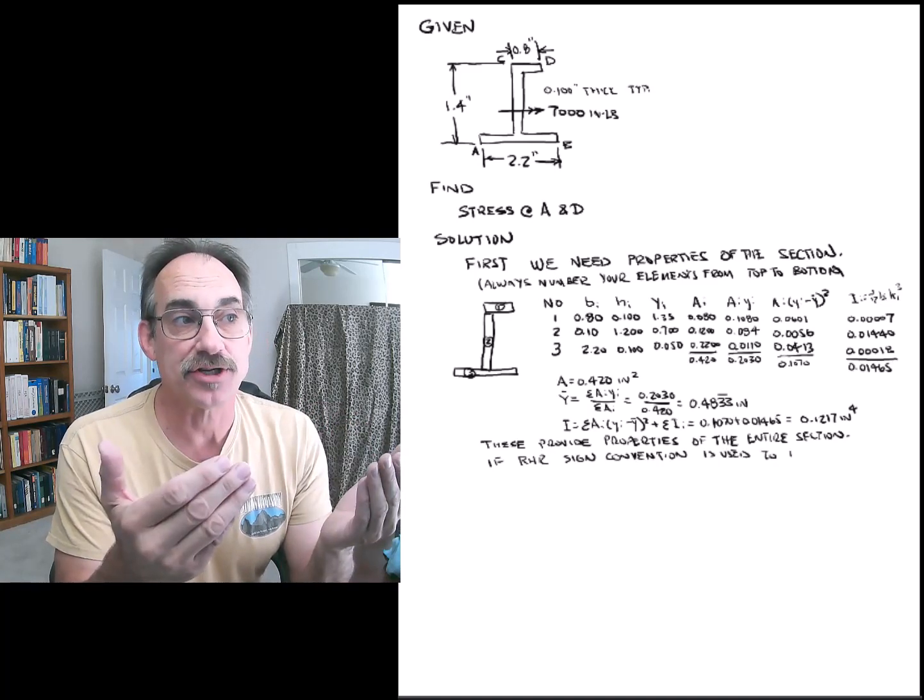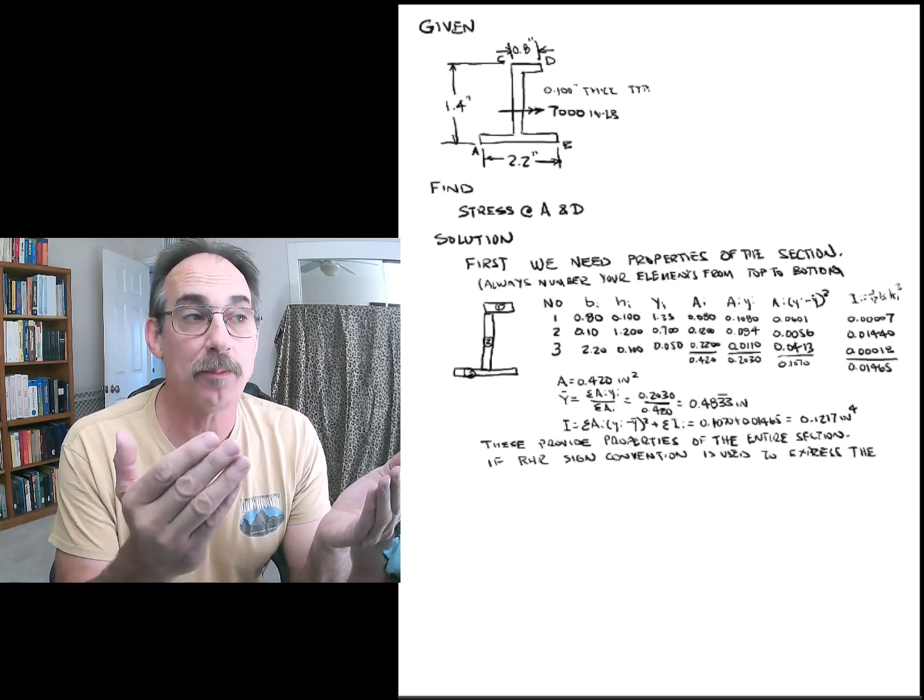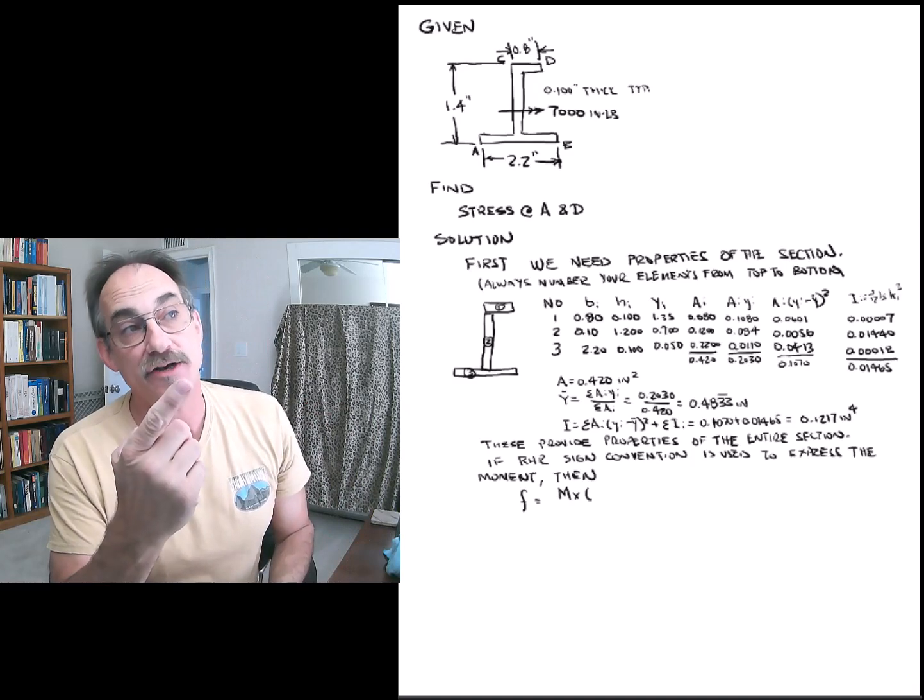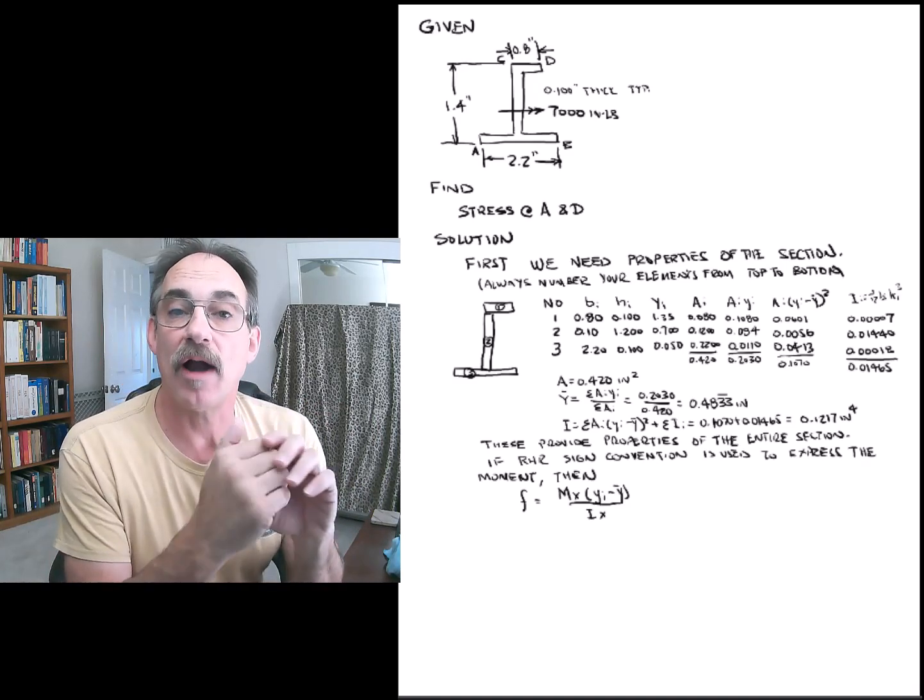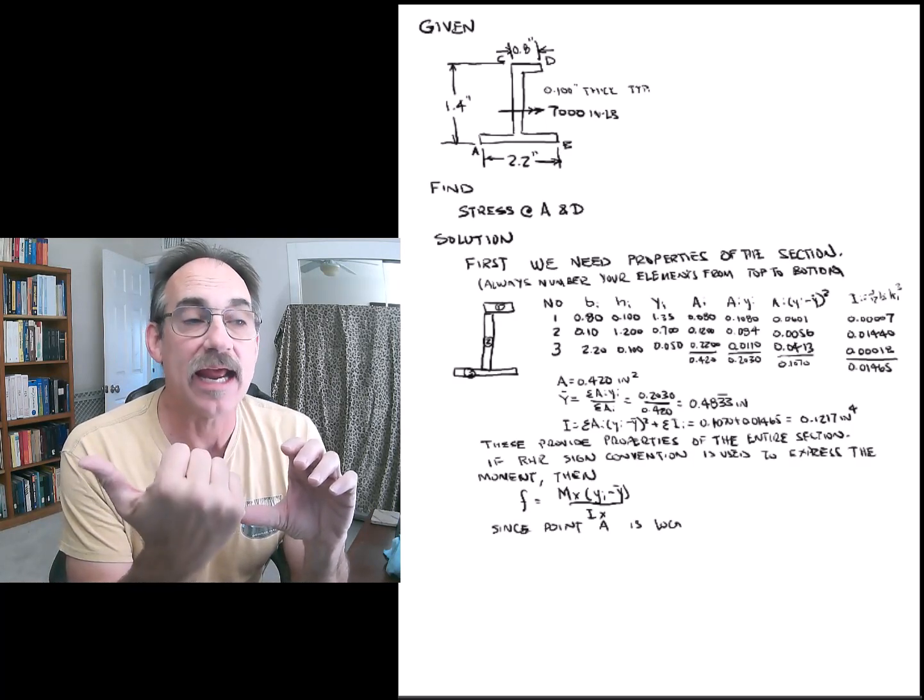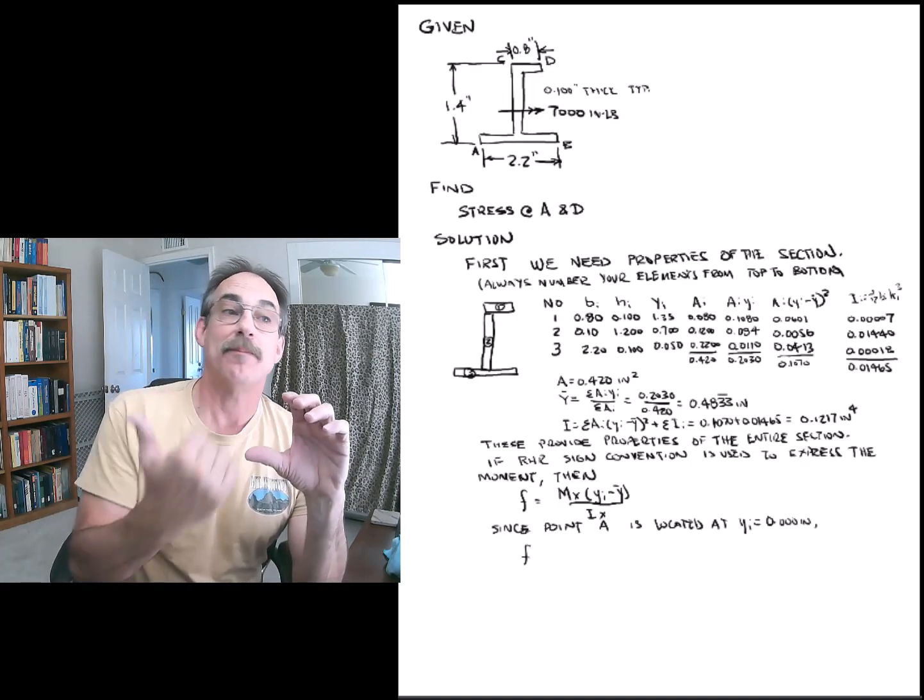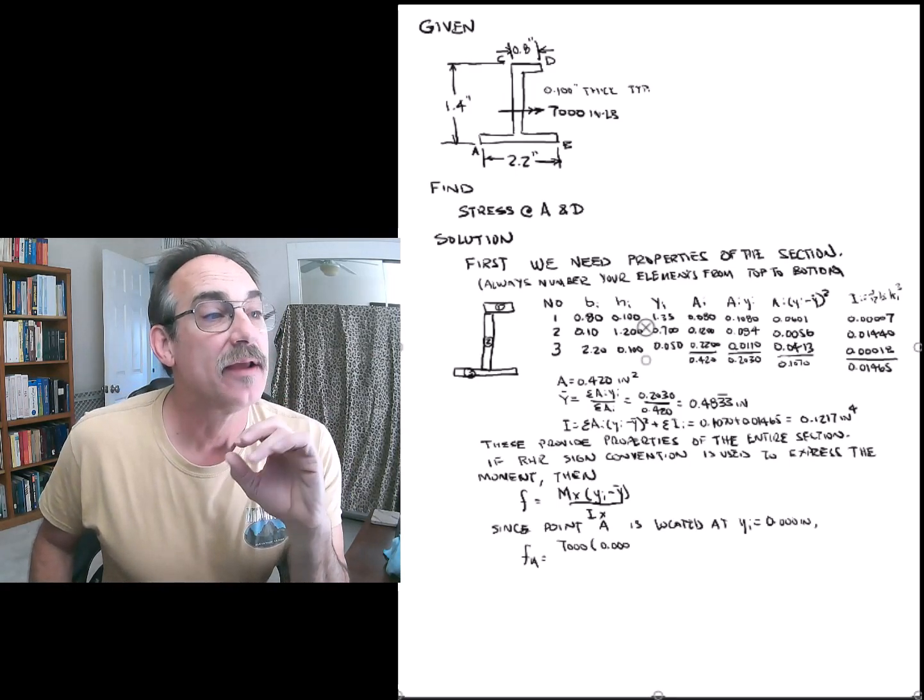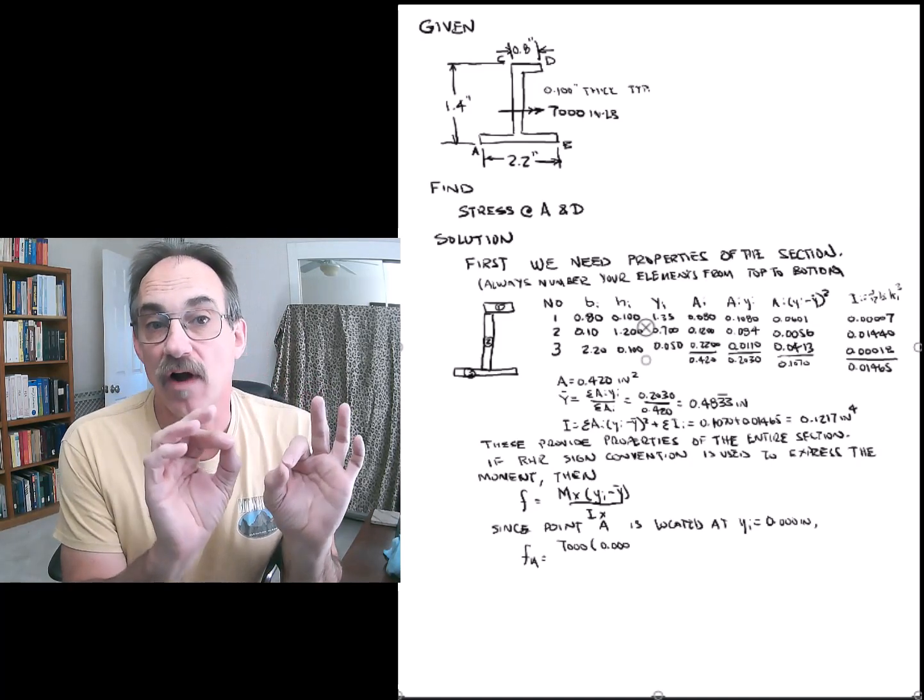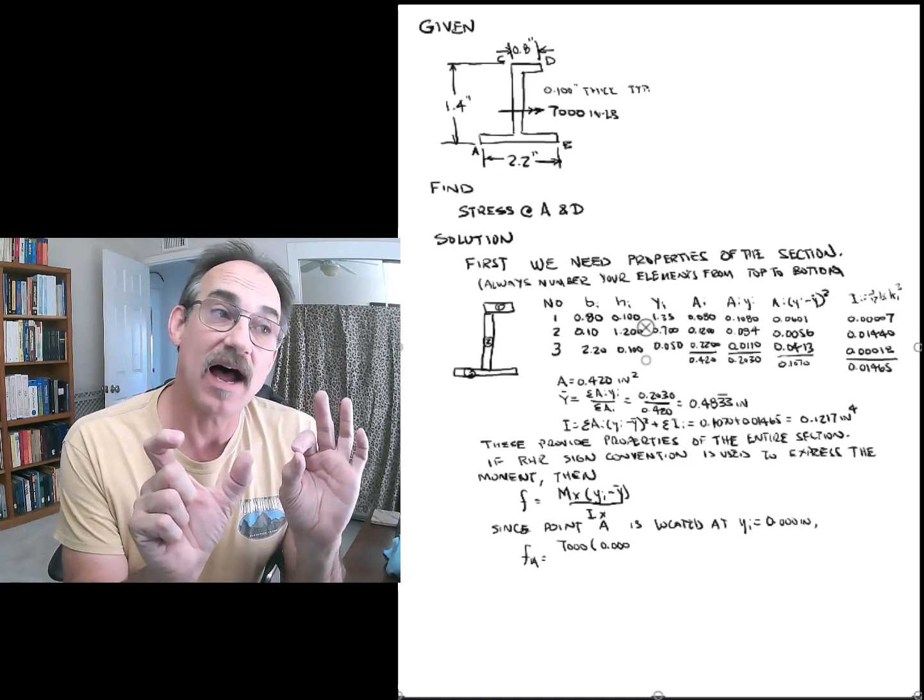Now we're ready to identify our stresses. We want to decide whether we want to use right-hand rule sign convention or beam sign convention. If we use right-hand rule, that means a positive moment. Generally we're going to assume our axis is positive x to the right, as we see with right-hand rule. That means a positive right-hand rule moment where we have its axis about that with a thumb pointing down that axis. Therefore, our stress is just MC over I, which is M times Y minus Y bar of that point over the I of the section.